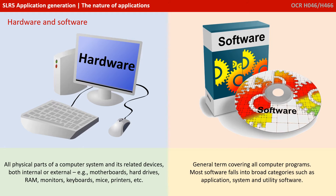Software is a very general term that covers all computer programs. Most software falls into broad categories, such as application, system or utility software.